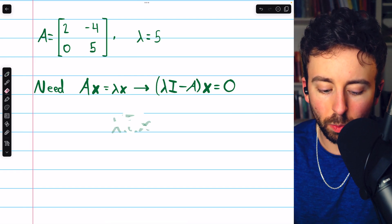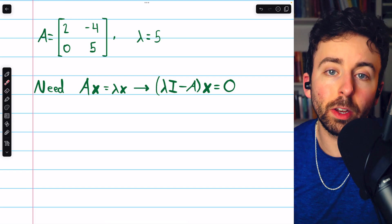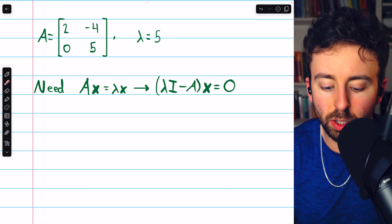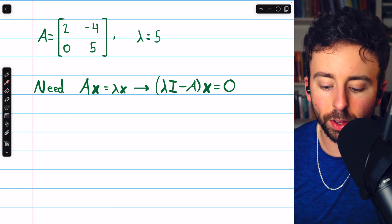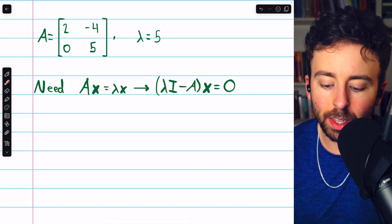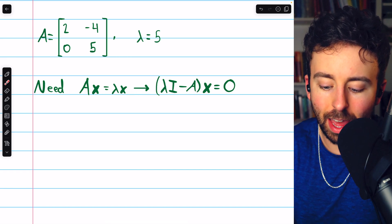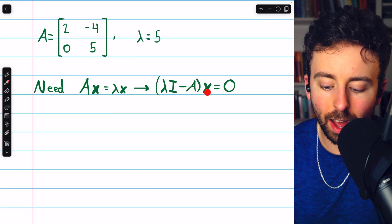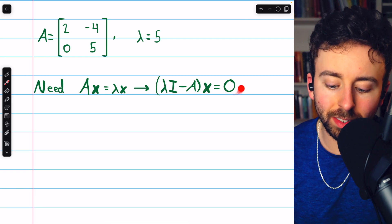It's nice to write it that way because then we can just write all of this as matrix multiplication. So if we do that and move A x over to the right, we end up with lambda times the identity minus that matrix A all times the vector x must equal zero.